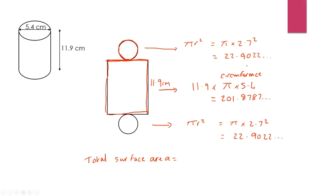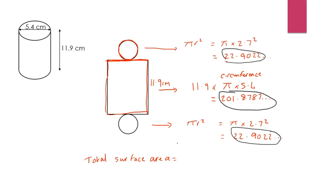I need to add up those three areas: 22.9022 + 22.9022 + 201.87, giving a total surface area of 247.6831 with a few more digits. Rounding to two decimal places — using the 3, which stays the same — gives 247.68 centimetres squared as the total surface area.